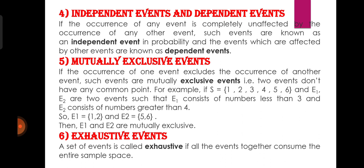Exhaustive events: a set of events is called exhaustive if all the events together consume the entire sample space। जितनी events हैं, अगर उन सबका sum कर दिया जाए और वो complete sample space को define कर दें, तो वो कहलाएंगी exhaustive events। जैसे एक coin को toss किया गया — या तो head आया या tail आया। अगर दोनों events को combine कर दिया जाए तो यह total sample space को define करेंगे, इसीलिए इन्हें हम exhaustive events के नाम से जानेंगे।